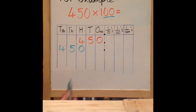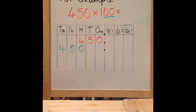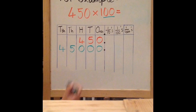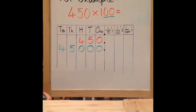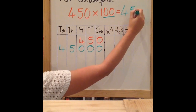But hang on — you now have two empty columns. Remember, the only number that can be a place filler is a 0, so you have to insert two zeros: one in your 10's column and one in your 1's column. Therefore, 450 multiplied by 100 is 45,000.